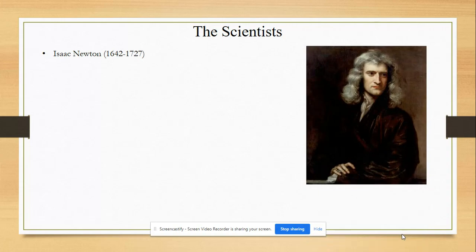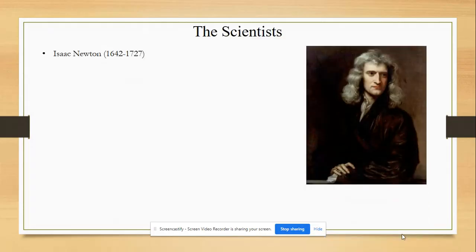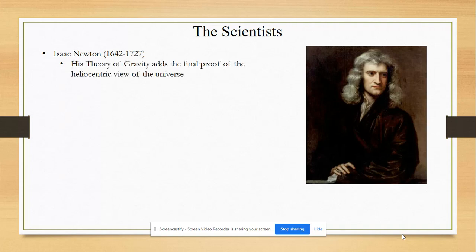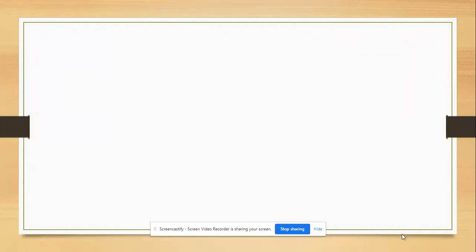Last of the great scientists: Isaac Newton. Copernicus is Polish, Galileo is Italian, Kepler is German — ranging across Central Europe — and then Isaac Newton is British. So this revolution is really spreading across Western and Central Europe. Newton is famous for his theory of gravity and a mechanistic view of the world, opposed to the medieval worldview. The world and the universe work like a machine. And if it works like a machine, just as we as humans can study and understand machines, we can study the machine of the natural world.